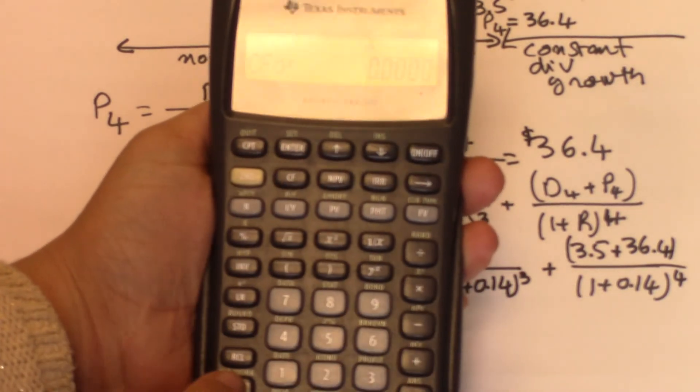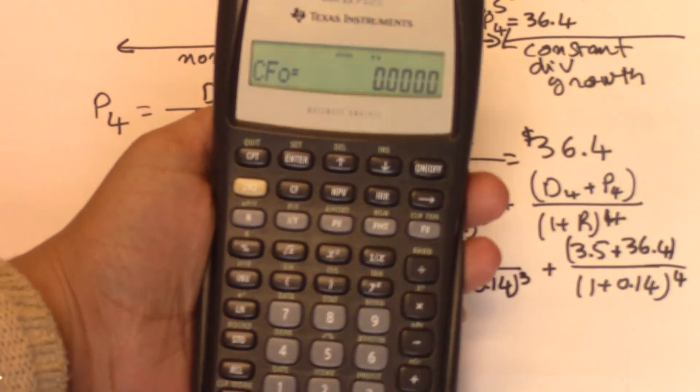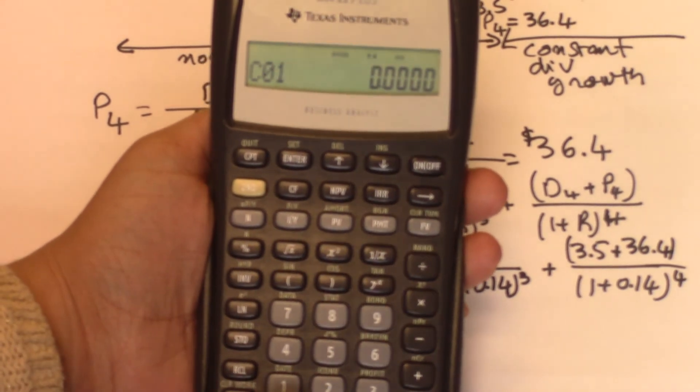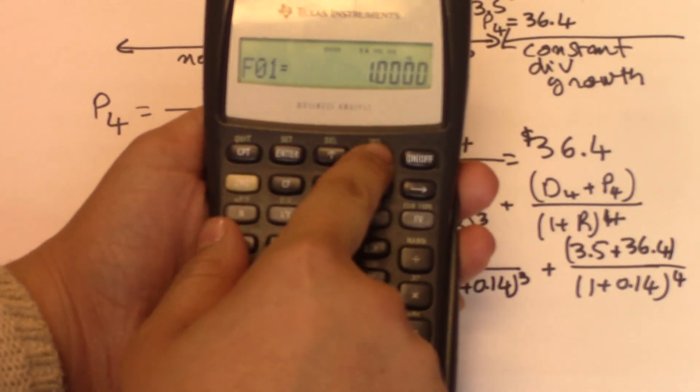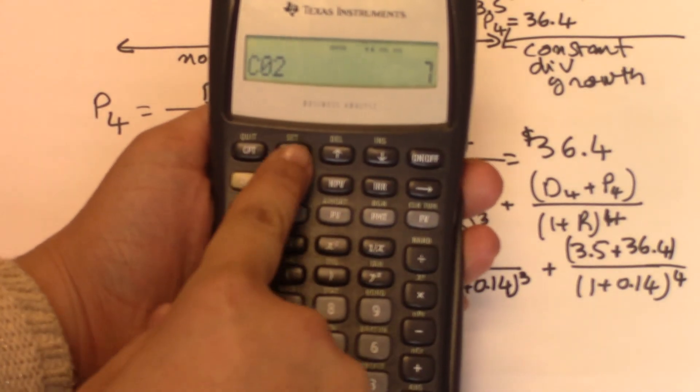CF zero, we don't have any cash flow at year zero. C01 is 11, enter, down arrow. C02 is 7, enter, down arrow.